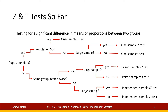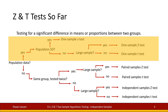So far we've been testing for significant differences with means or proportions between two groups, focusing on the one-sample variety — where we have one sample group and compare it back to its population — in the form of the one-sample Z and one-sample T test. Now we're going to shift gears into two-sample mode, which breaks out into two different families: paired samples and independent samples for Z's and T's.